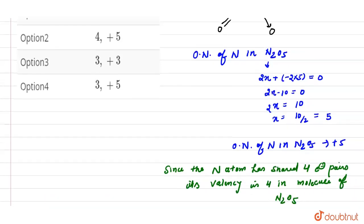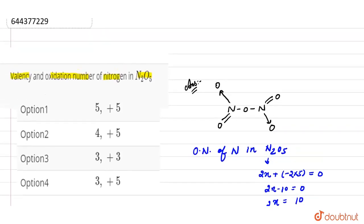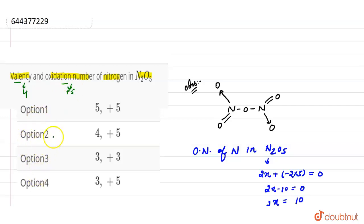Looking at the options, valency is four and oxidation number is five. Since the question asks for valency first, then oxidation number — valency is four and oxidation number is five. Therefore, option two is the correct answer.